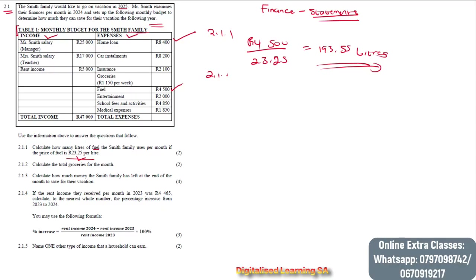Next, question 2.1.2 says: calculate the total groceries for the month. We can see that in a week they spend R1,150 on groceries, and we know that in a month we have four weeks. So to find the total groceries for the month, we multiply 1,150 by four, which gives us R4,600.